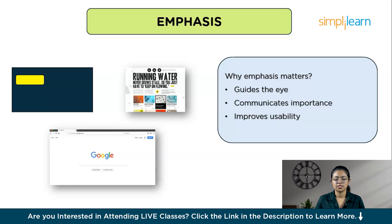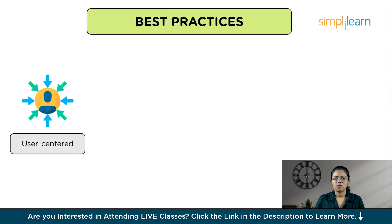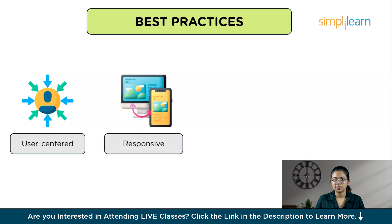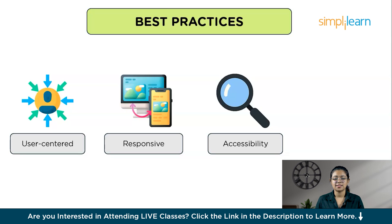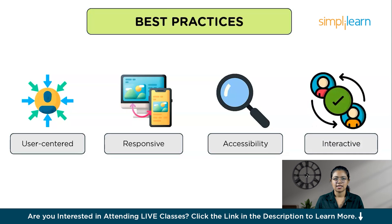Now that we've covered layout and composition in UI/UX design, let's look at best practices to implement these. User-centered design: always prioritize the needs and preferences of users — conduct user research and testing to understand their behaviors and expectations. Responsive design: ensure your layout and composition adapt seamlessly to different devices and screen sizes. Accessibility: use high contrast colors, easy-to-read fonts, and simple navigation. Iterative design: continuously test and refine your layouts based on user feedback and analytics, and use prototyping tools to create interactive mockups before final implementation.